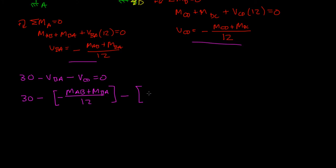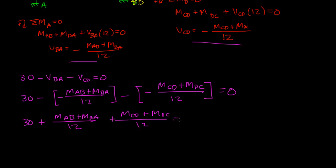I can say 30 minus VBA, which is negative MAB plus MBA over 12, and then minus VCD, VCD was negative MCD plus MDC over 12, and that's equal to 0. Let's simplify.